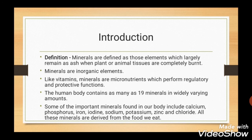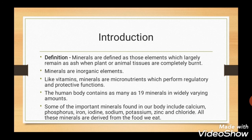Let's start with introduction. Minerals are defined as those elements which largely remain as ash when plant or animal tissues are completely burnt. Minerals are inorganic elements. Regulatory and protective functions are performed by both vitamins and minerals. There are 19 different minerals present in the human body but their amounts vary. Some important minerals found in our body are calcium, phosphorus, iron, iodine, sodium, potassium, zinc and chloride. All these minerals are derived from the food we eat.